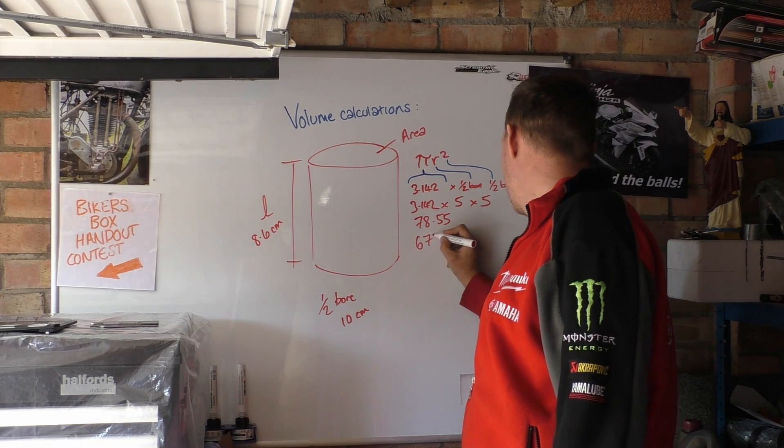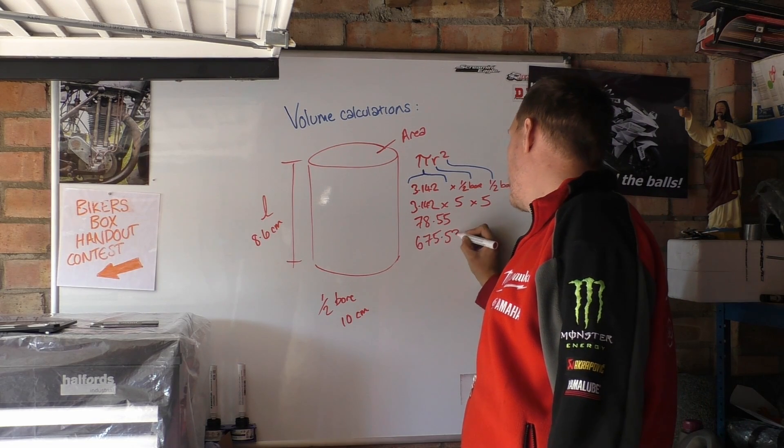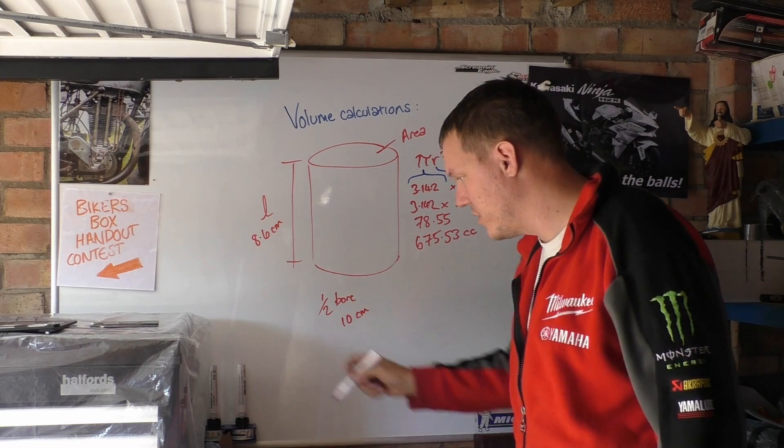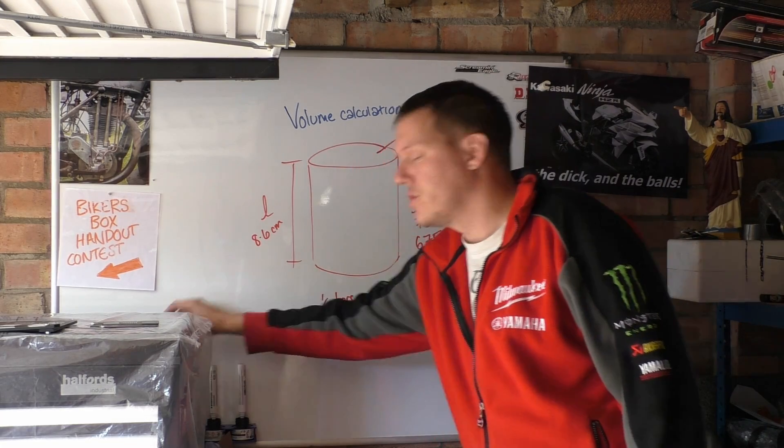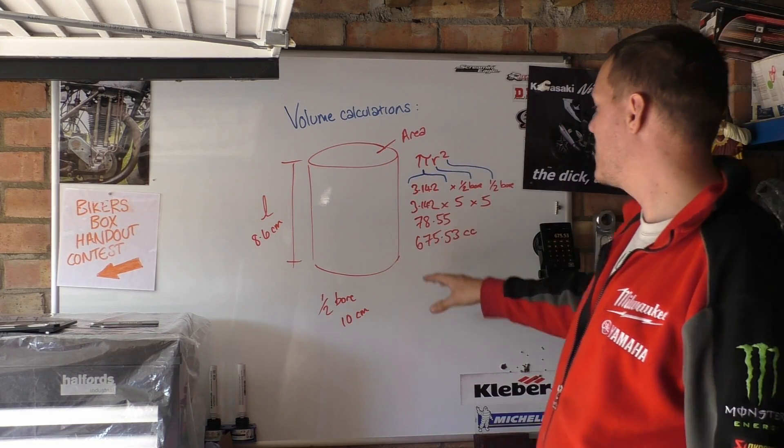So you've got 675.53 CC. There you go. You've got it. That's your volume of your cylinder worked out.